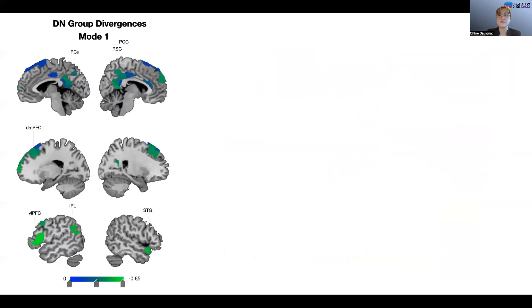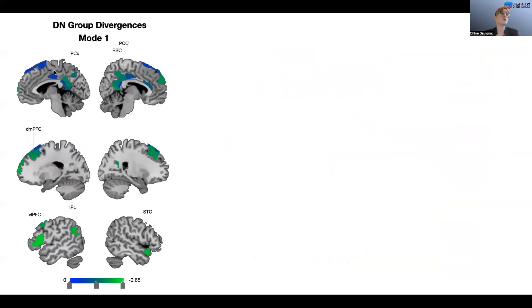I will show the divergence we identify on mode 1, which as I said is by construction the mode that captures the most variance between the hippocampus and default network sub-regions. So on mode 1 for the default network side, we observed a lot of hits to midline structures, so posterior midline structures as the precuneus,